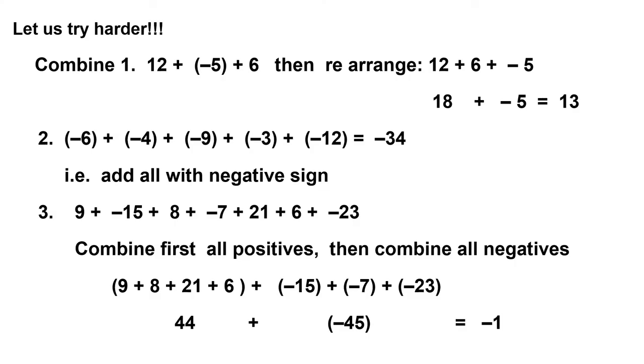Okay, let's try harder. I want you to combine positive 12, negative 5, positive 6. But first, we have to arrange them in such a way that those with the same sign are together, such as positive 12 and positive 6. We combine them and it equals 18.